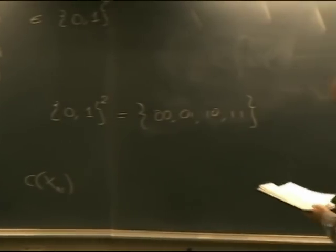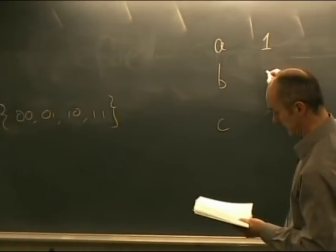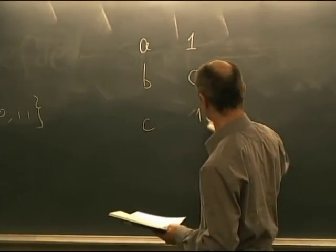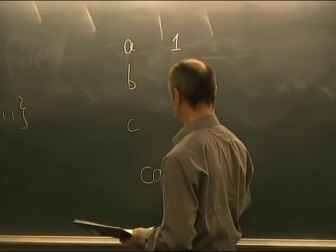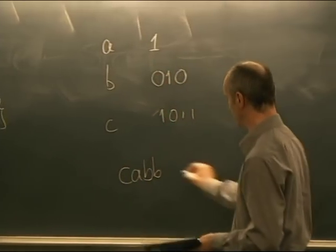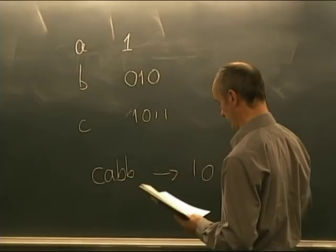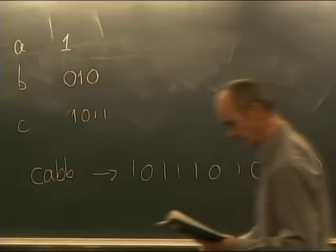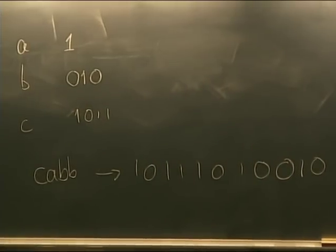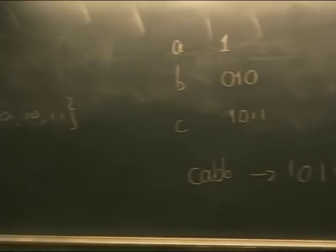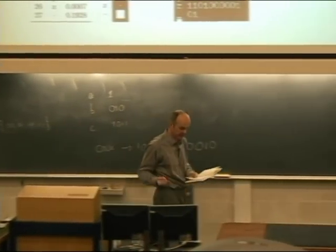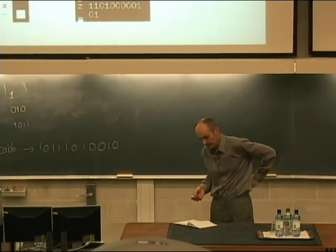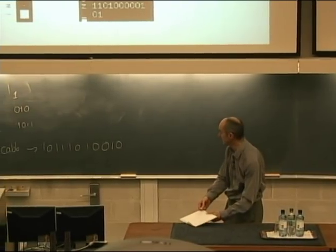For example, if A has codeword 1, B has codeword 010, and C has codeword 1011, then the file containing C, A, B, B would get encoded as 1011, 1, 010, 010. These are quite important and widely-used codes, especially historically. Now we need to understand them theoretically and practically.